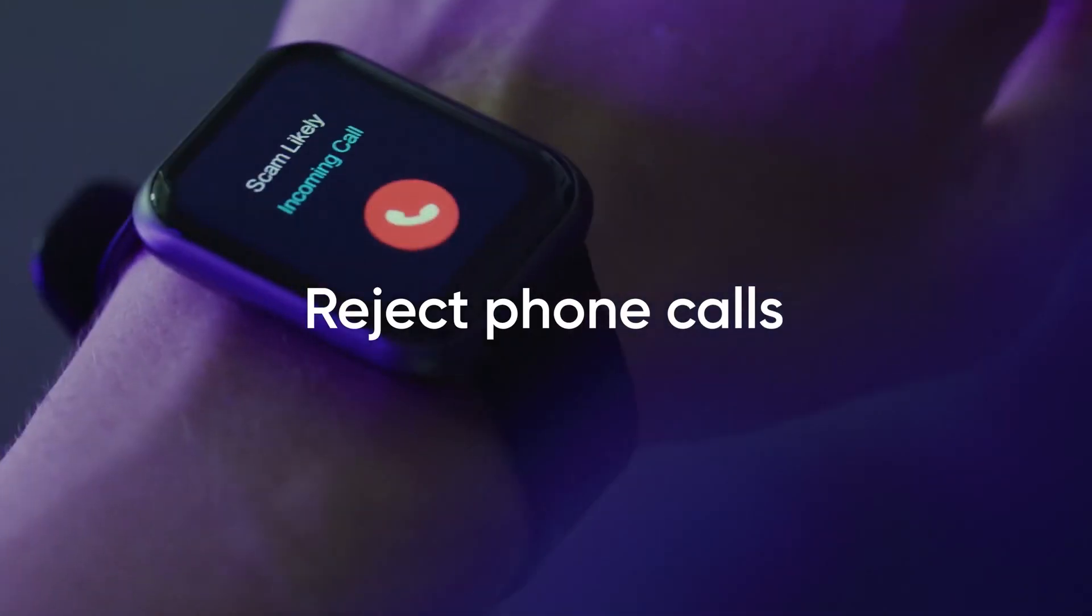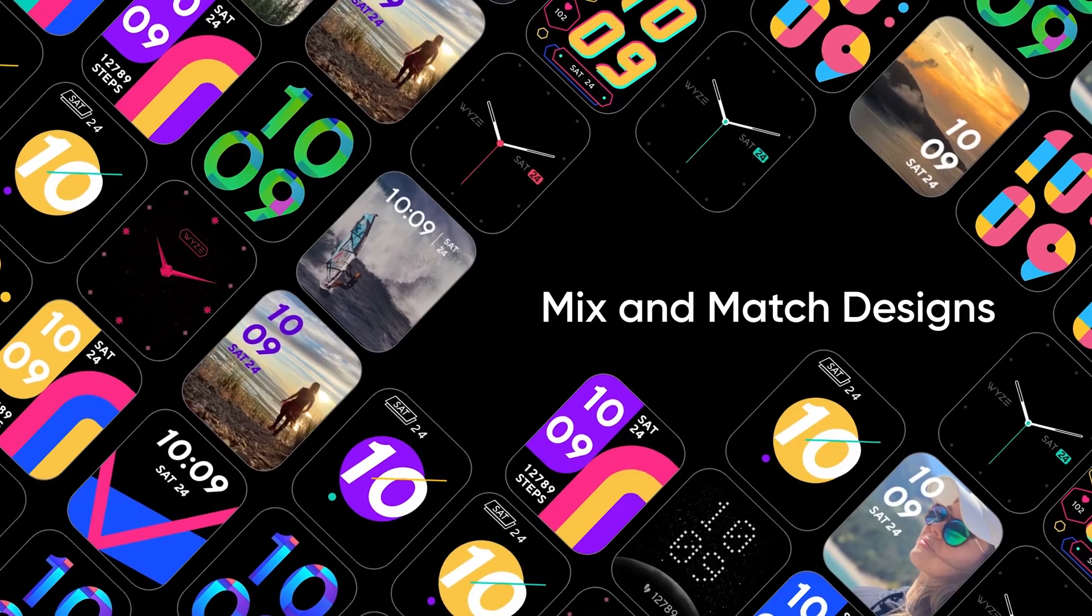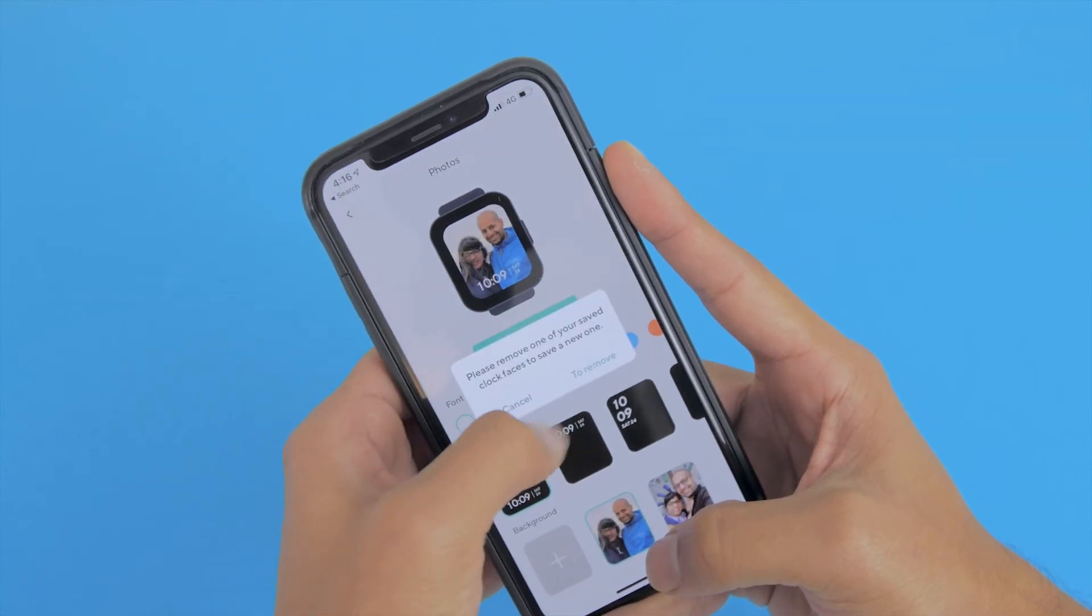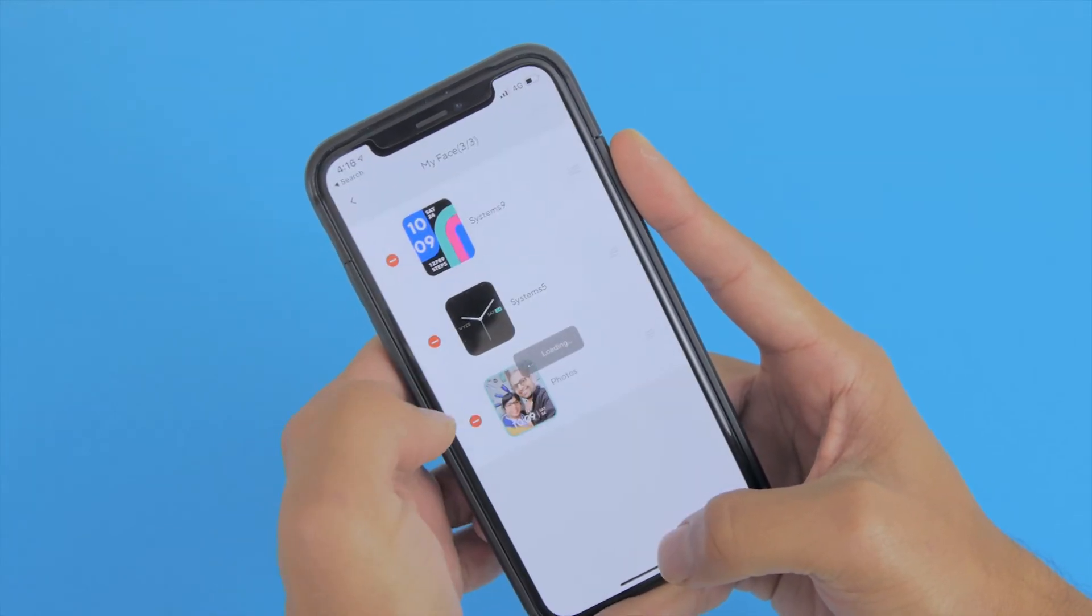Not too much customization is available when it comes to watch faces. However, you can pick any image on your phone as the backdrop of your watch, and it holds three themes at once.